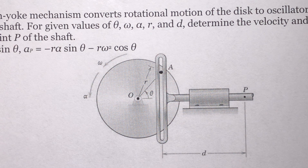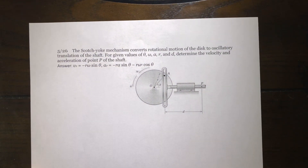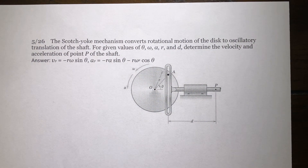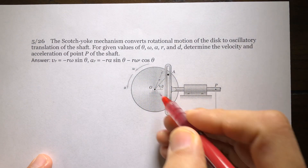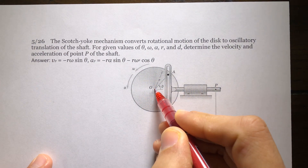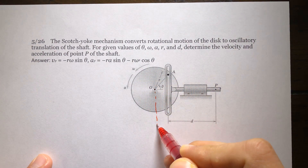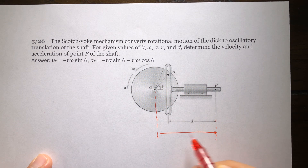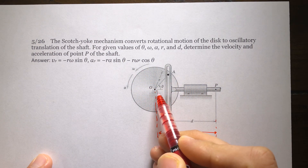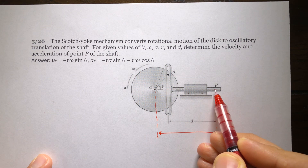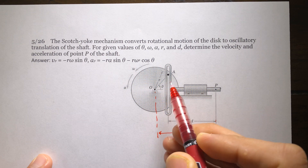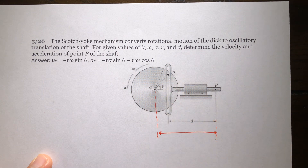So I guess you did that. Now let's work on it together. The problem is quite simple. The location of P from the center of the disk is equal to this distance plus constant D. And this distance is going to be simply R times cosine of theta.